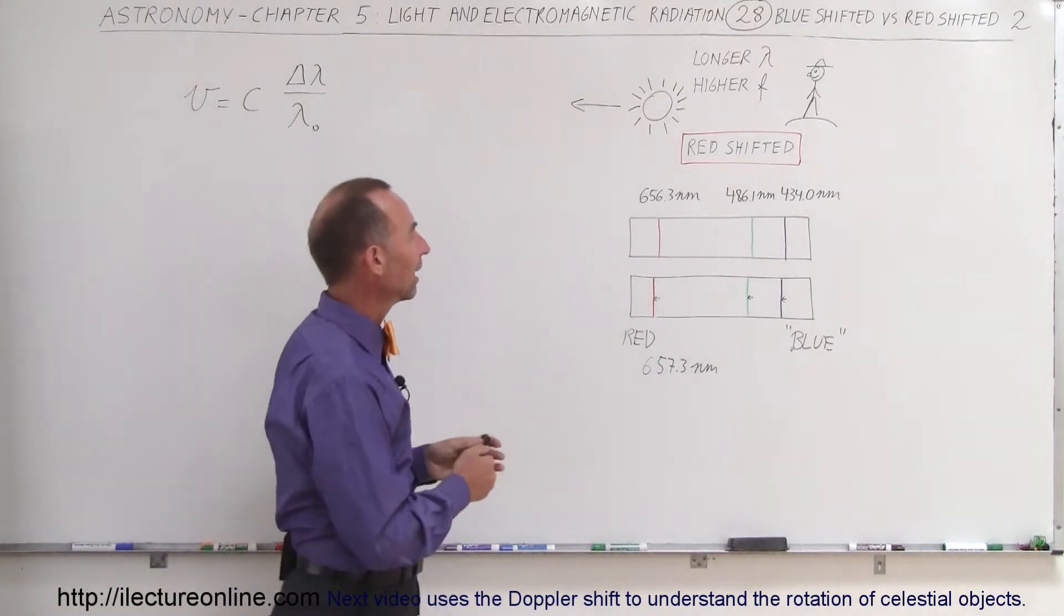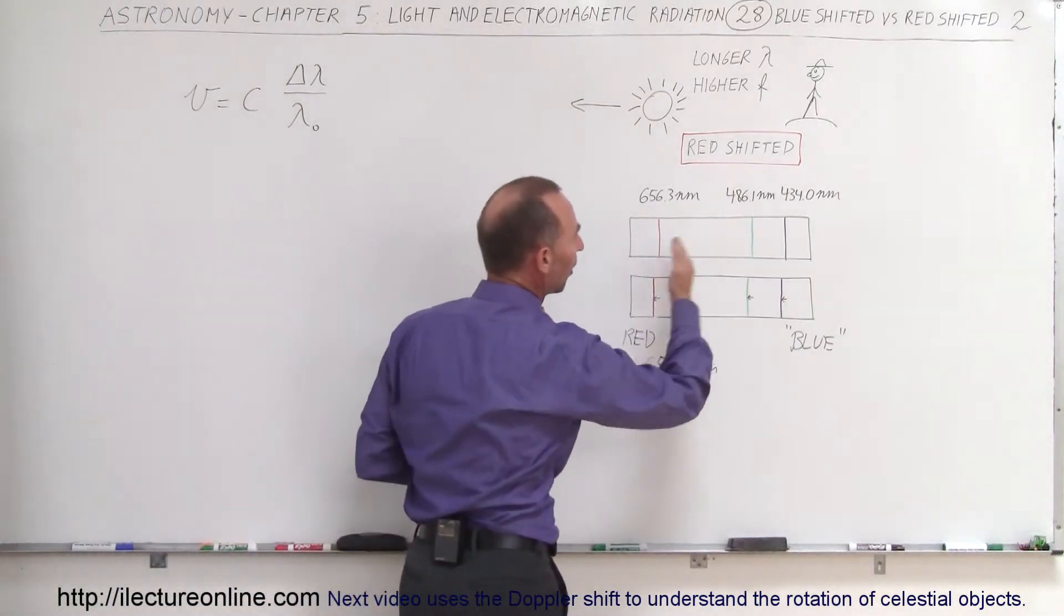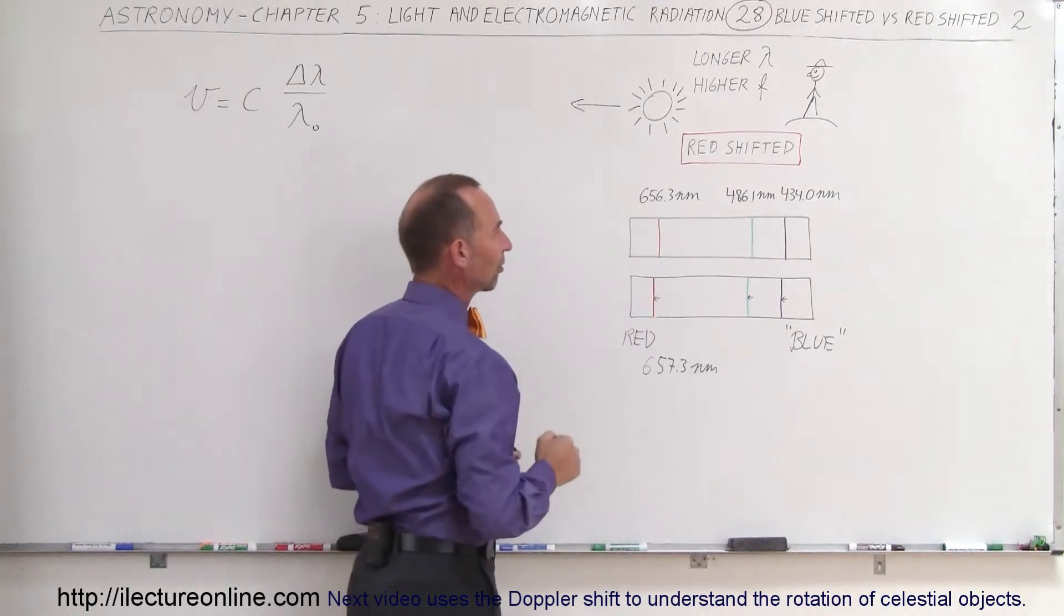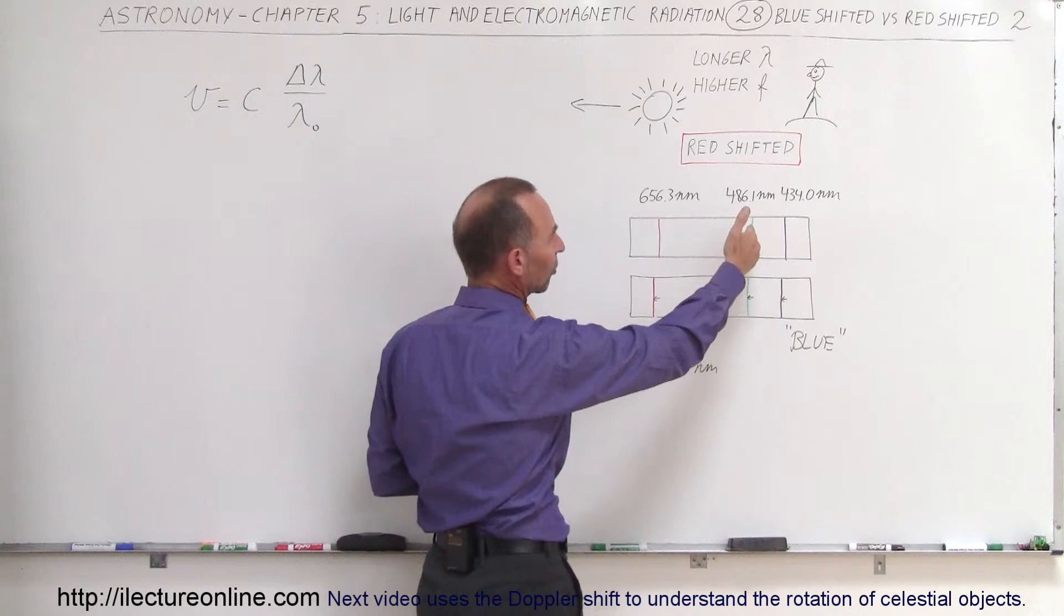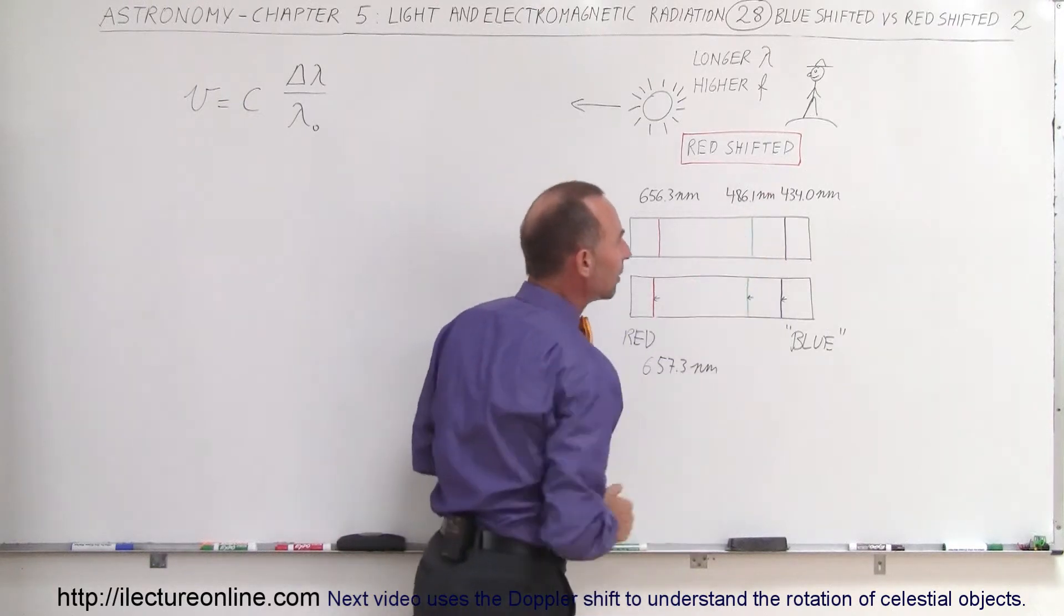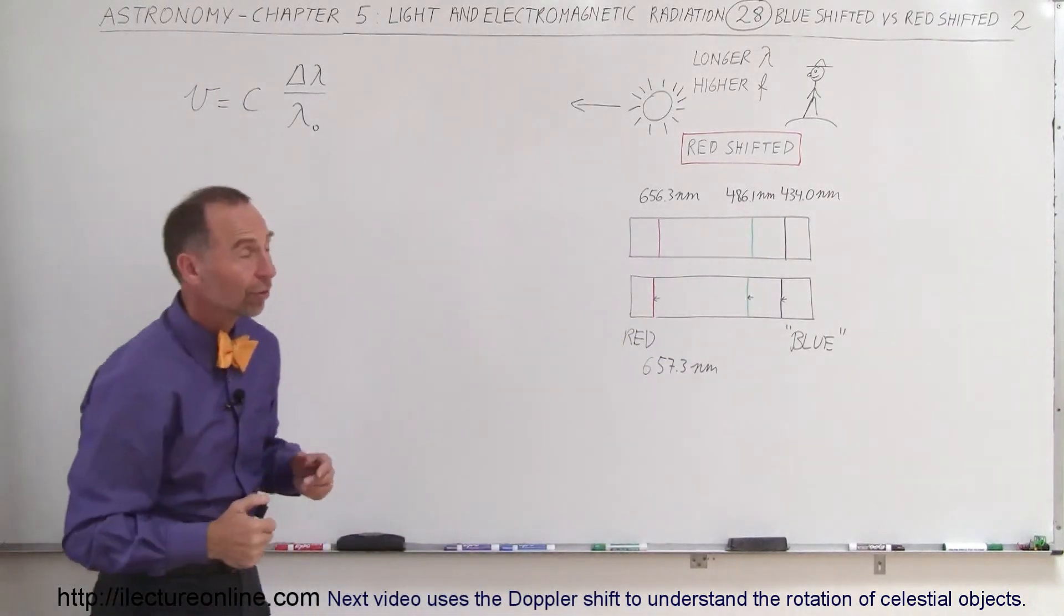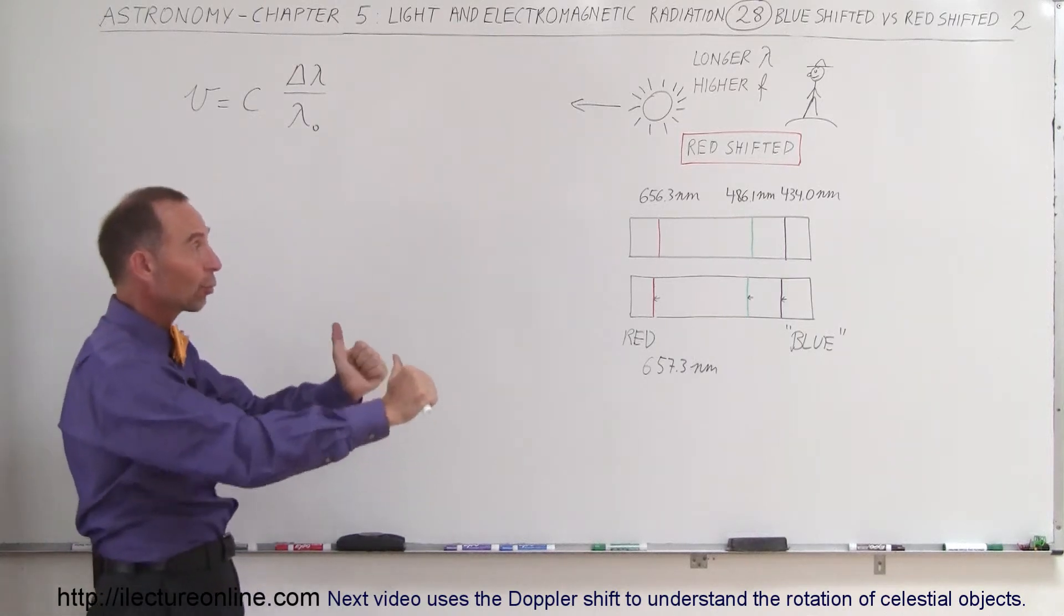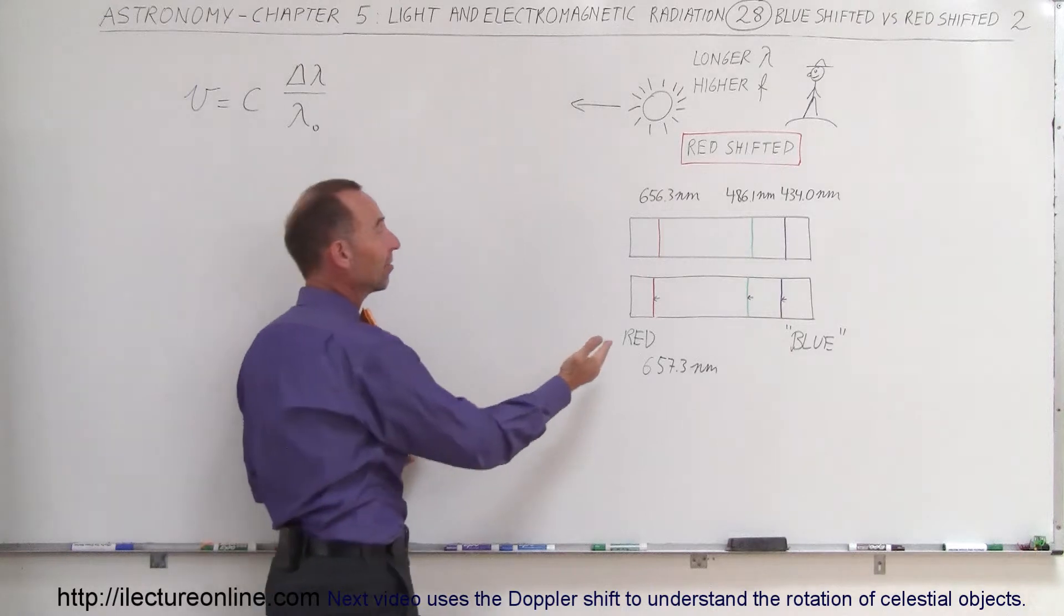Here we have an example of red shifting. The object is moving away from us. Here's the spectrum of hydrogen. Notice that normally the red line is at 656.3 nanometers, the green line is at 486.1, and the purple line is at 434.0 nanometers. If it's moving away from us, that means longer wavelengths. It will be shifted towards the red color.